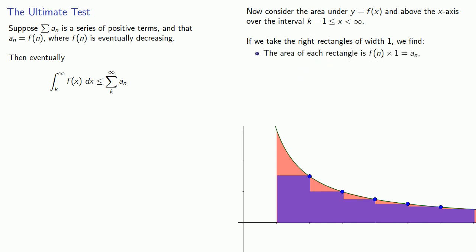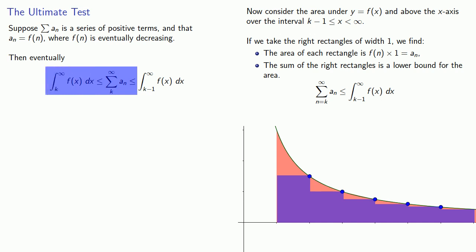And the sum of the right rectangles is going to be a lower bound for the area. And so the sum from n equals k to infinity of our a n's is less than or equal to the integral from k minus 1 to infinity. And what this means is that this series sum from k to infinity is bounded from below by one improper integral, and bounded above by another improper integral.